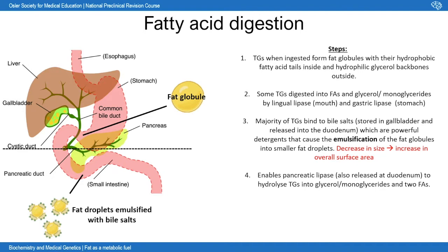The majority of triglycerides are digested after they bind with bile salts. Bile is made by the liver, stored in the gallbladder, and released through the cystic and common bile ducts into the duodenum. Once released, bile salts bind to the fat globules and emulsify them — converting large fat globules into much smaller fat droplets — massively increasing their surface area and therefore increasing the rate of enzymatic activity.